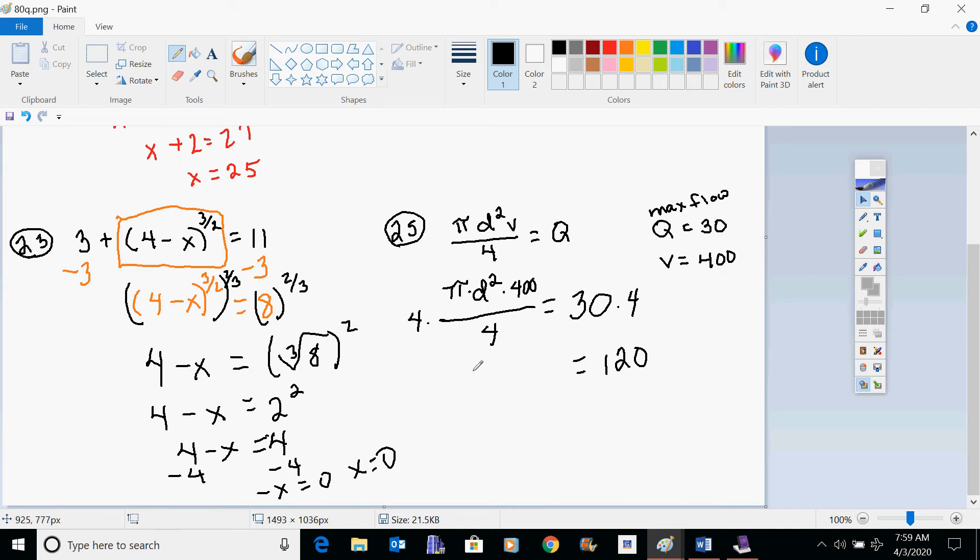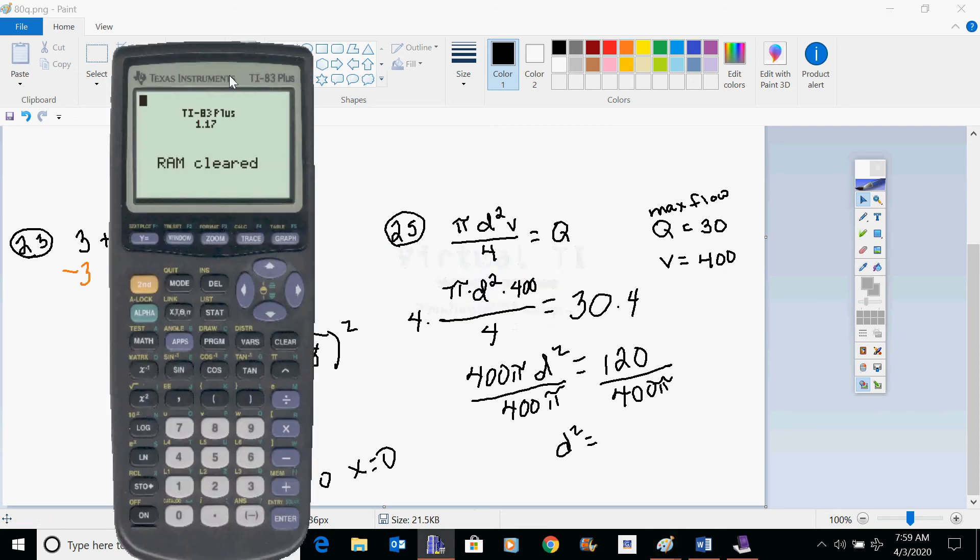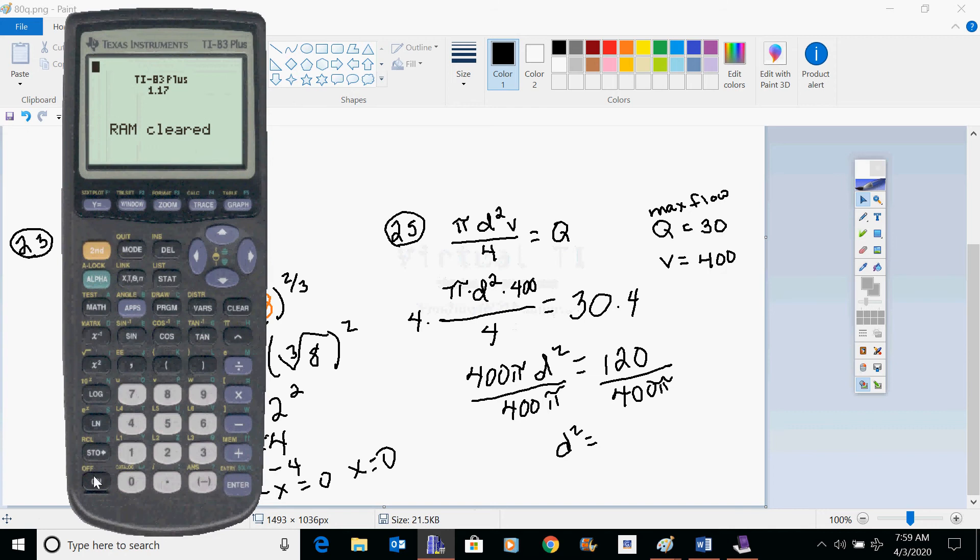If we multiply both sides by 4, you get 120. And then you get 400 pi d squared. And we can divide both sides by 400 pi. Now hopefully you've all got your calculators that you were supposed to have gotten earlier in the year or have found a good simulator.